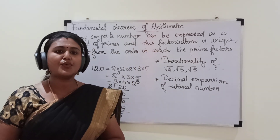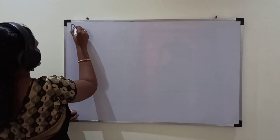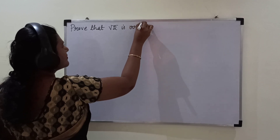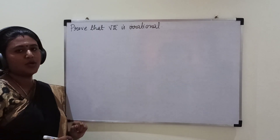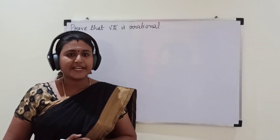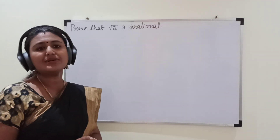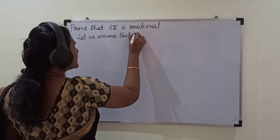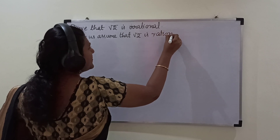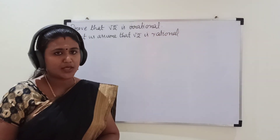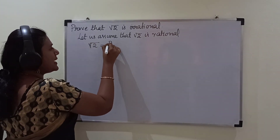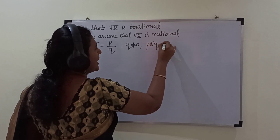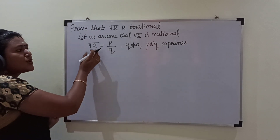Now we will see how to prove that √2 is irrational. For proving √2 irrational, we are using the contradiction method. So first let us assume that √2 is a rational number. You know a rational number can be expressed in the form p/q. So we can write √2 = p/q, where q ≠ 0 and p and q are co-primes, meaning √2 is in its simplest form.